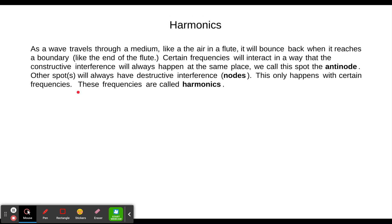So Harmonics, just a quick review. As a wave travels through a medium, like the air in a flute, it will bounce back when it reaches a boundary like the end of the flute. Certain frequencies will interact in a way that the constructive interference will always happen at the same place. We call this spot the anti-node. Other spots will always have destructive interference. These are the nodes. This only happens with certain frequencies where you get nodes and anti-nodes. These frequencies are called harmonics.